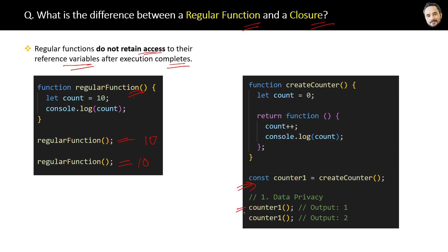When we call closure one for the first time, it will give the output value 1. When we call it again, it will increment the last value by one, and then the output will be 2. So the reason is closures retain access to their reference variables.